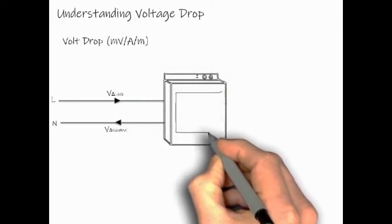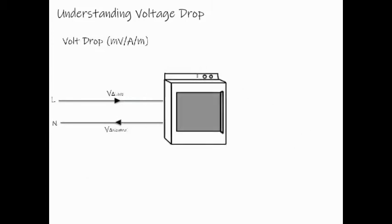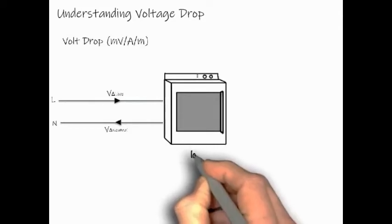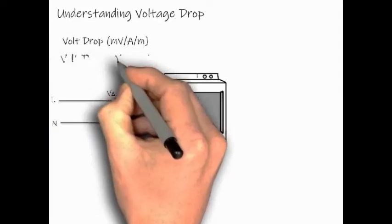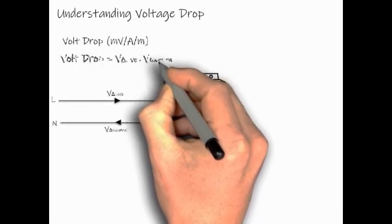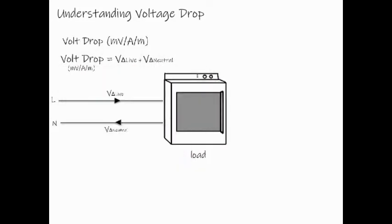For instance, a single phase load connected to a pair of live and neutral cable, the resistive voltage drop on the length per meter can be calculated by summing up the voltage drop in the live conductors as well as the neutral conductors. Therefore, the formula for voltage drop is equal to voltage drop on the live cable plus the voltage drop on the neutral cable.